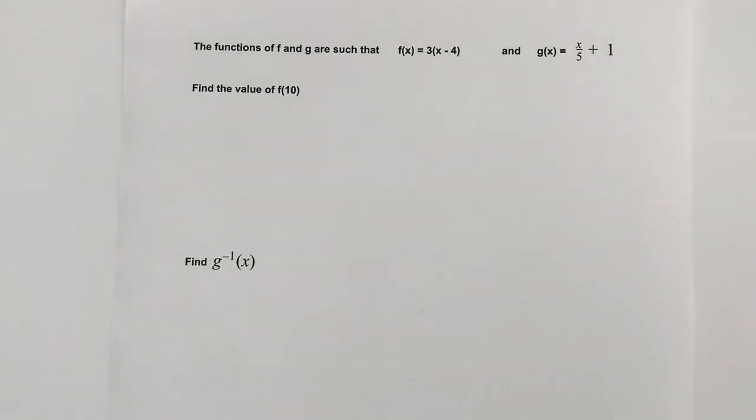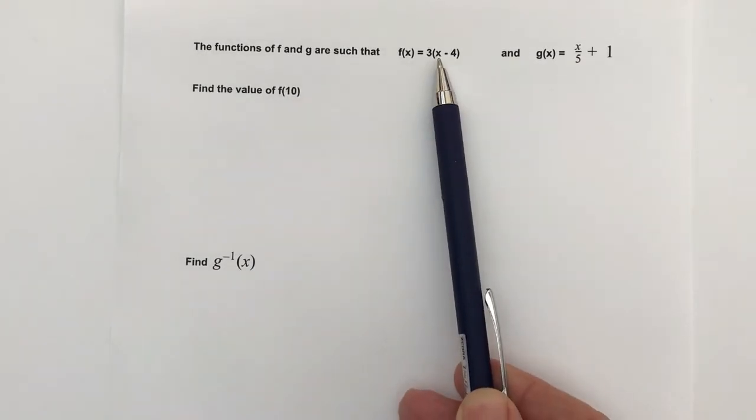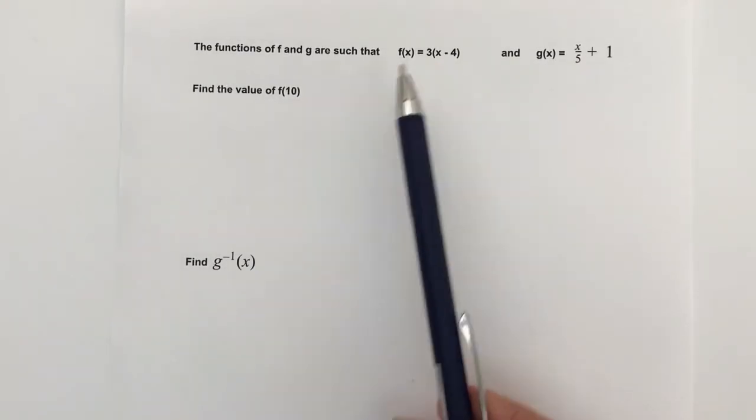The first part is to find the value of f(10). Basically what we mean by that is take that value of 10 and where you see the x, put it into there.